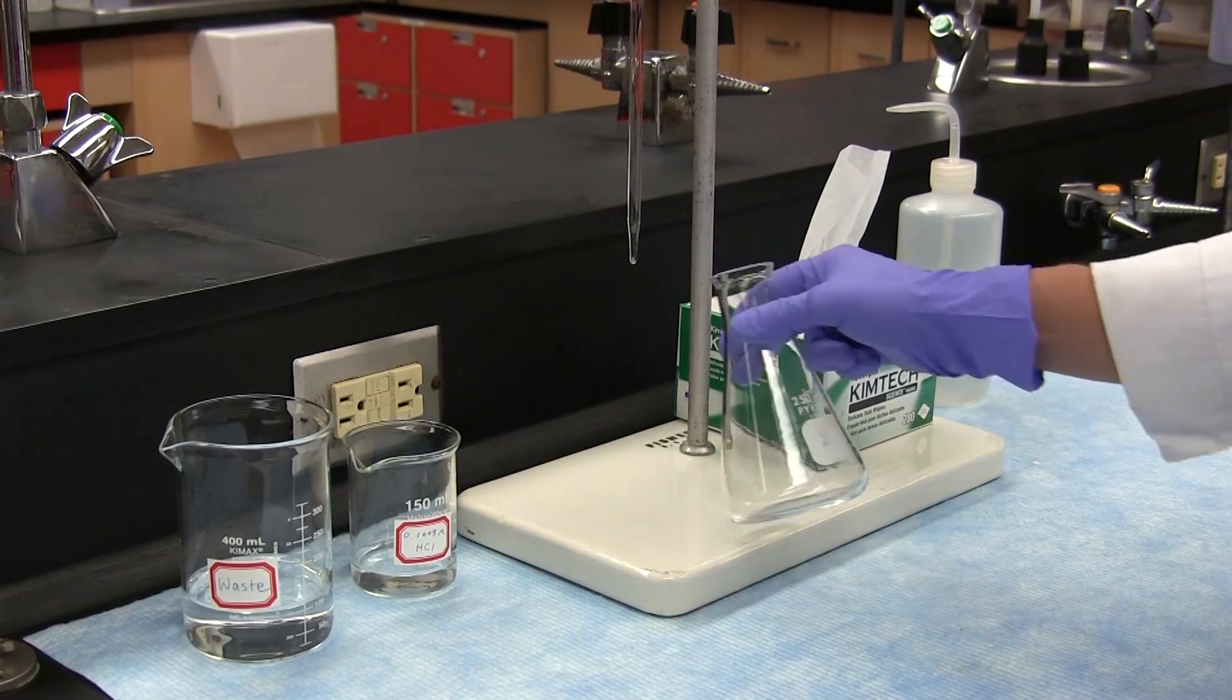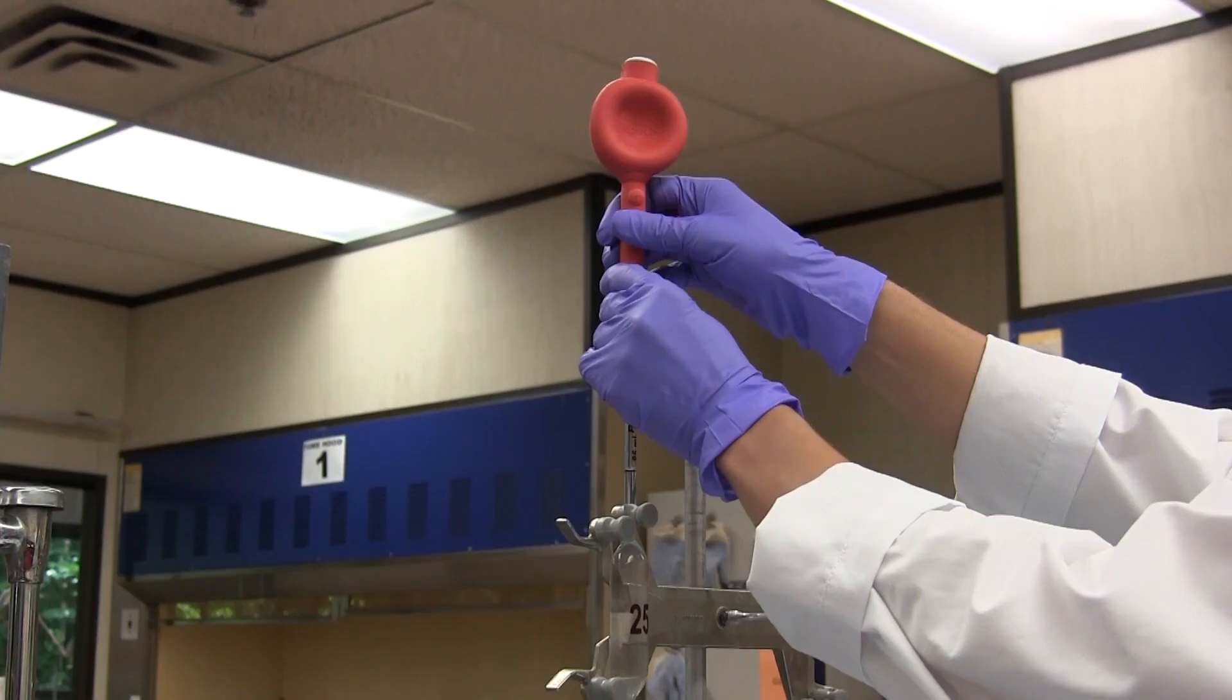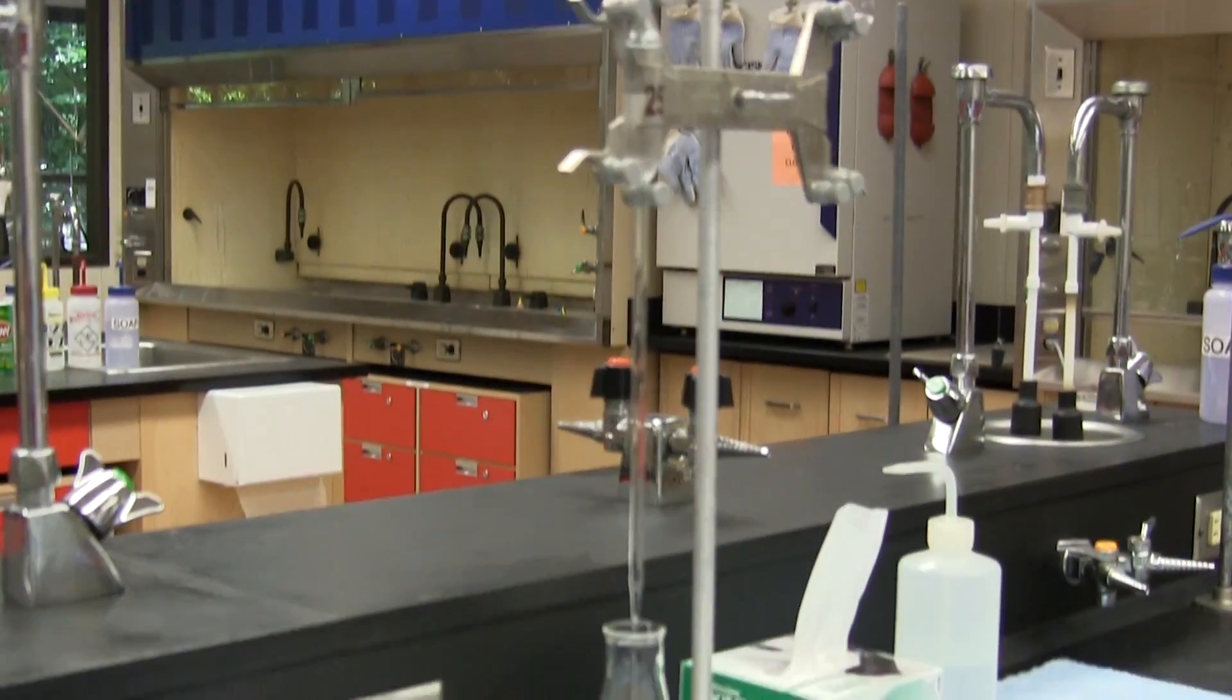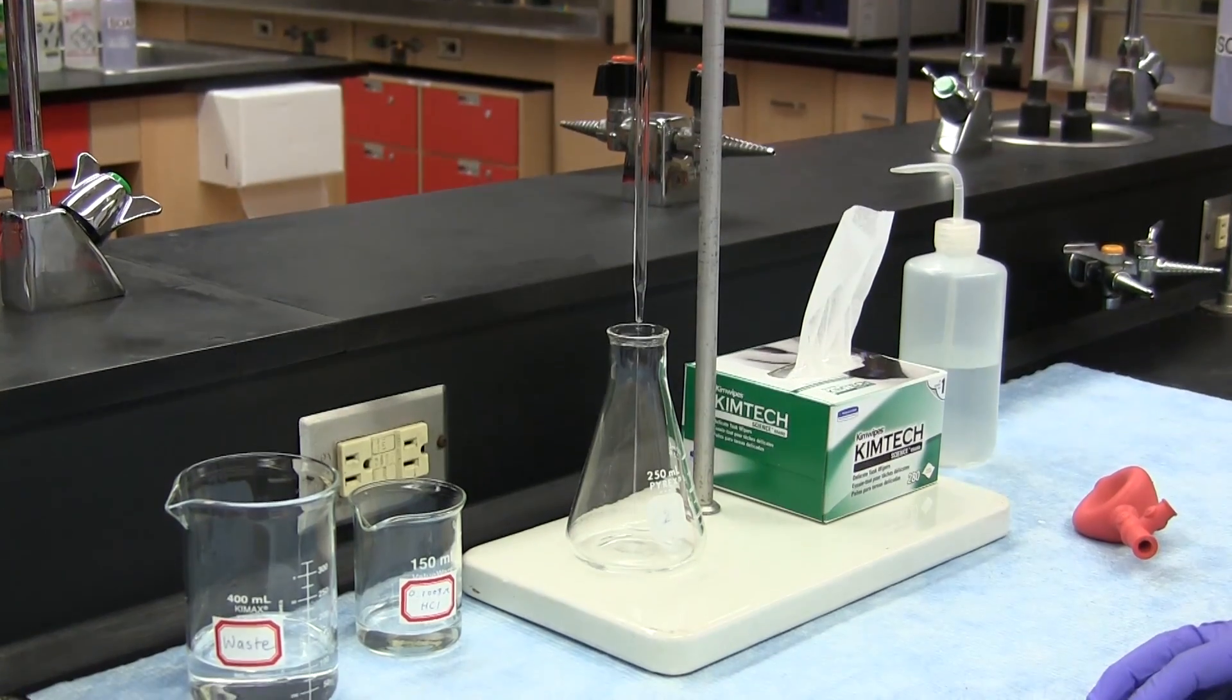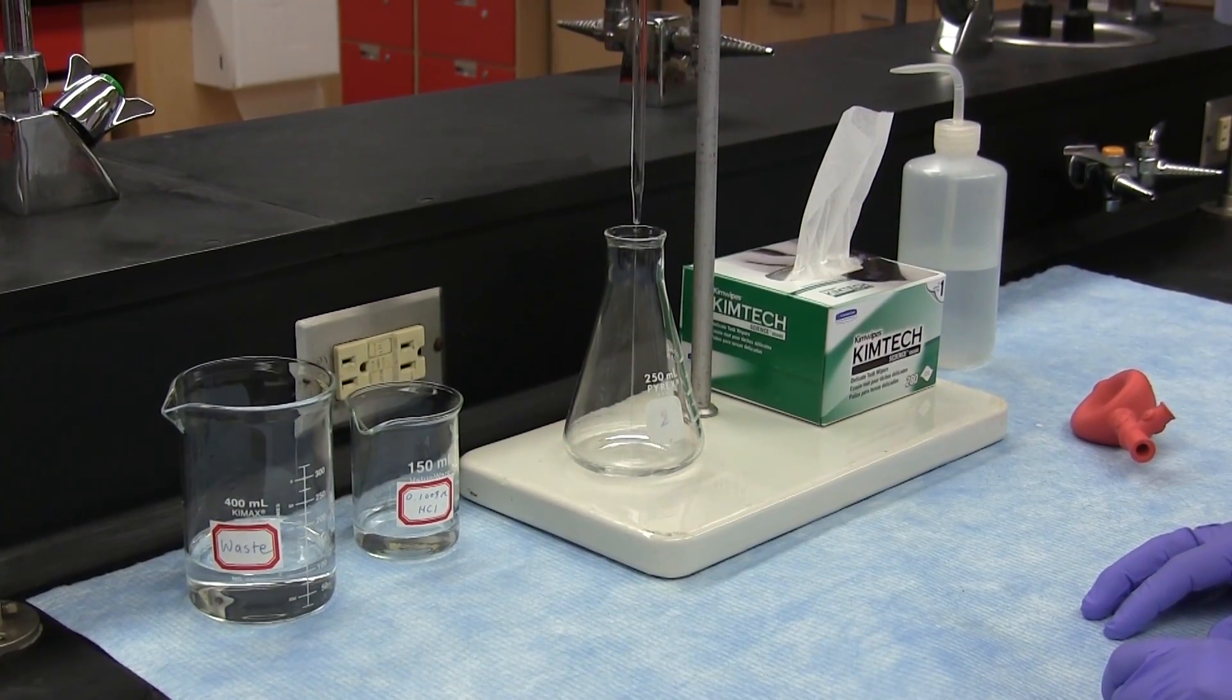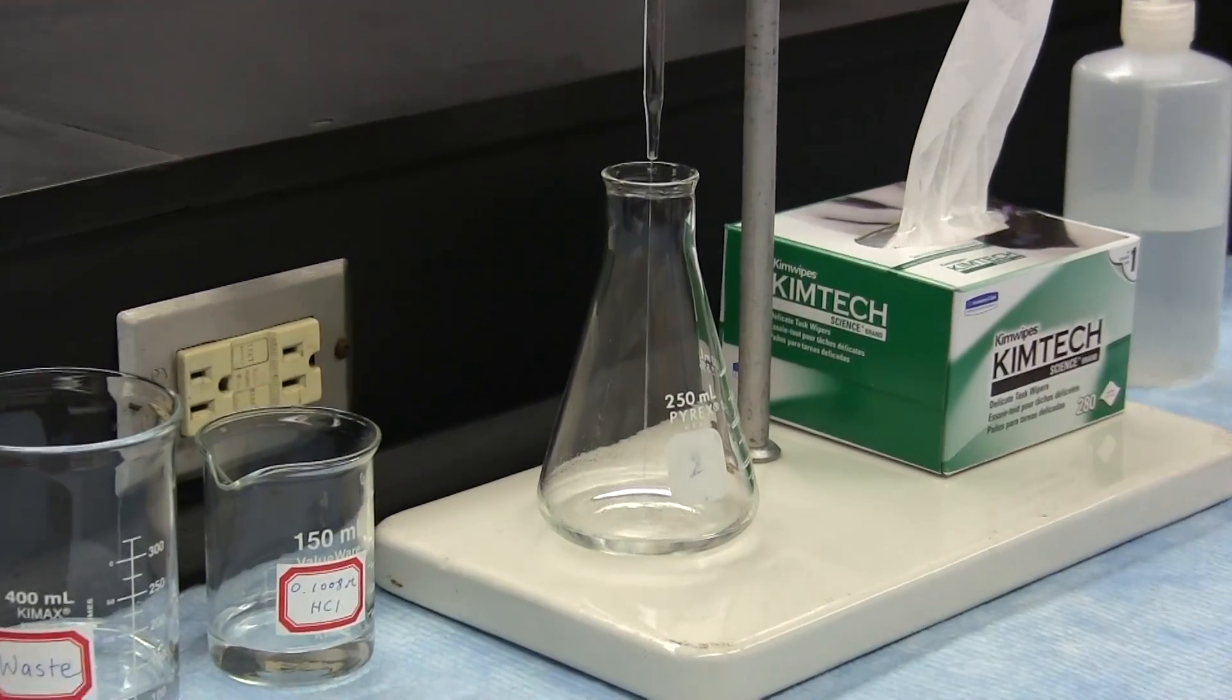The receiving vessel, in this case an Erlenmeyer flask, is then placed under the pipette and the pipette is allowed to drain. Don't allow the pipette to touch the glass or to be immersed in a liquid during the draining process. The pipette should be allowed to drain its contents by gravity alone.